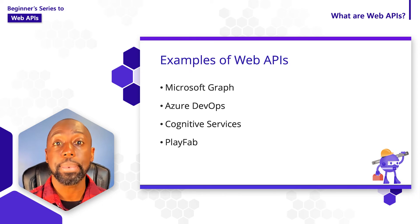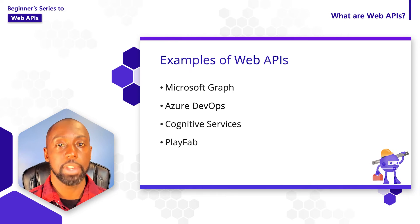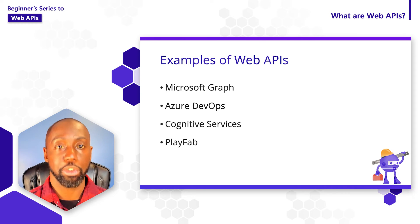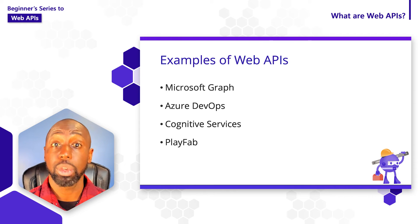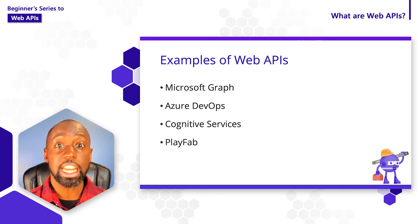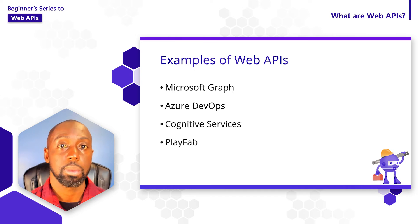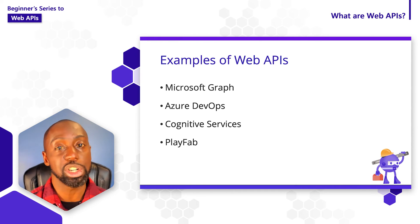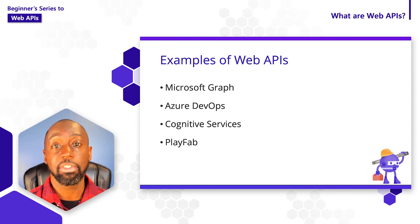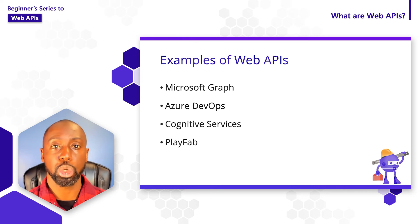Now that we've seen some examples of apps that could use web APIs, let's talk about examples of web APIs themselves. Within the Microsoft ecosystem, there are a few interesting operations we could look at. Microsoft Graph, for instance, is a collection of APIs that gives us information back about our M365 account. If you use Azure DevOps for your CI/CD, you can get information about your DevOps pipeline using the Azure DevOps API. Also, if you're interested in doing machine learning and adding that functionality to your app, you can use something like Cognitive Services. And if you're building games, PlayFab is an interesting set of APIs that could do things like leaderboard tracking, scoring, and player management.